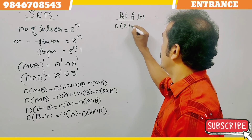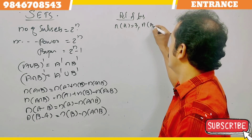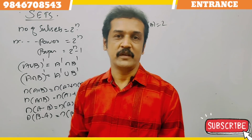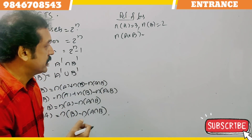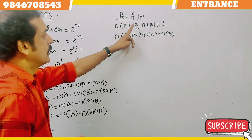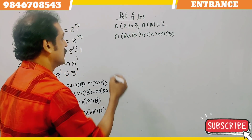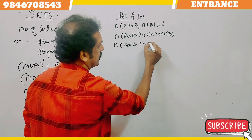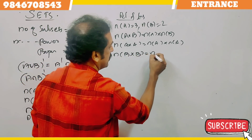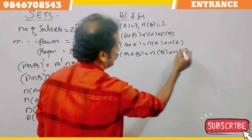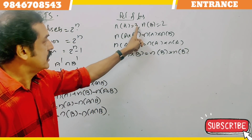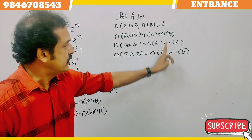Now, if n(A) = 3 and n(B) = 2, then the number of elements in A cross B: n(A×B) = n(A) × n(B) = 3 × 2 = 6. Also, n(A×A) = n(A) × n(A) = 3 × 3 = 9. And n(B×B) = n(B) × n(B) = 2 × 2 = 4.